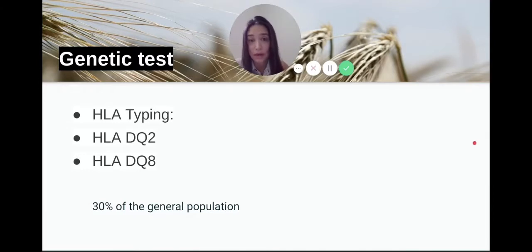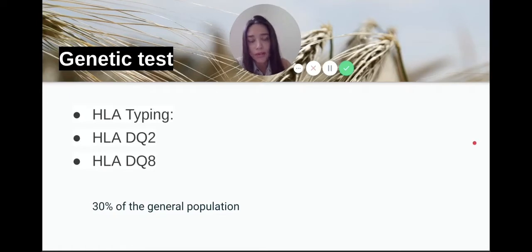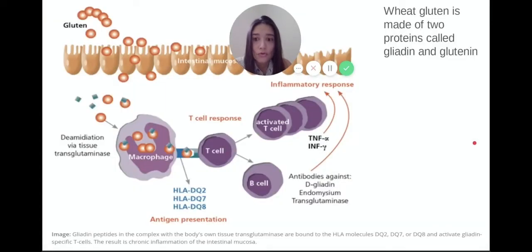So the question becomes: other than gluten, is there another trigger? Because I have patients with positive HLA typing who do not have celiac and have been eating gluten just fine. They might have minor symptoms, but not many abdominal symptoms. And I've actually had patients with negative biopsies.